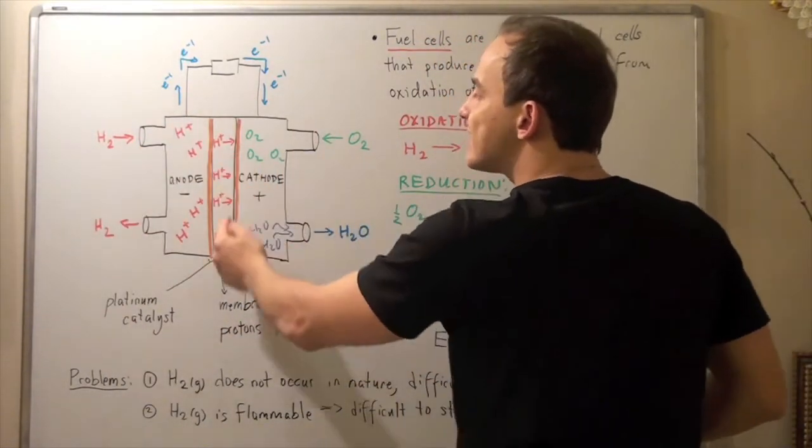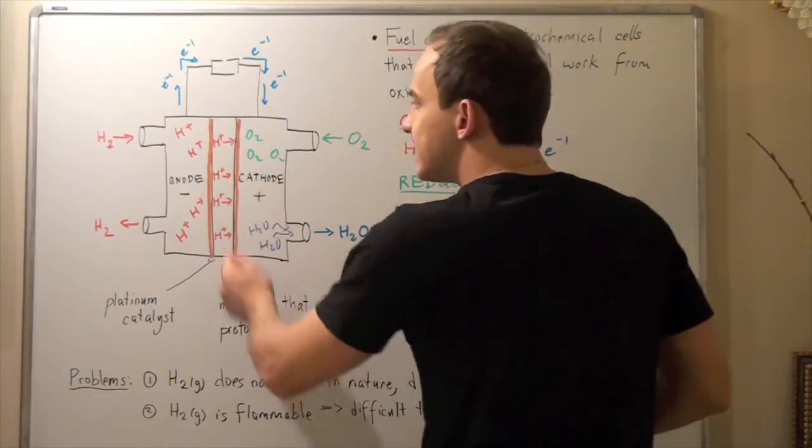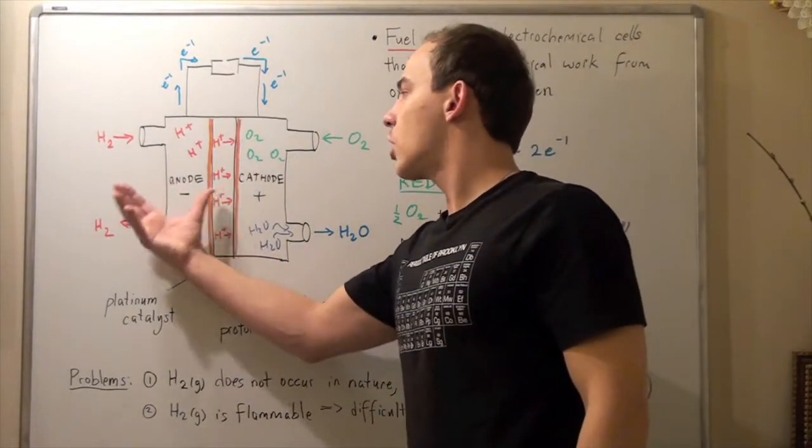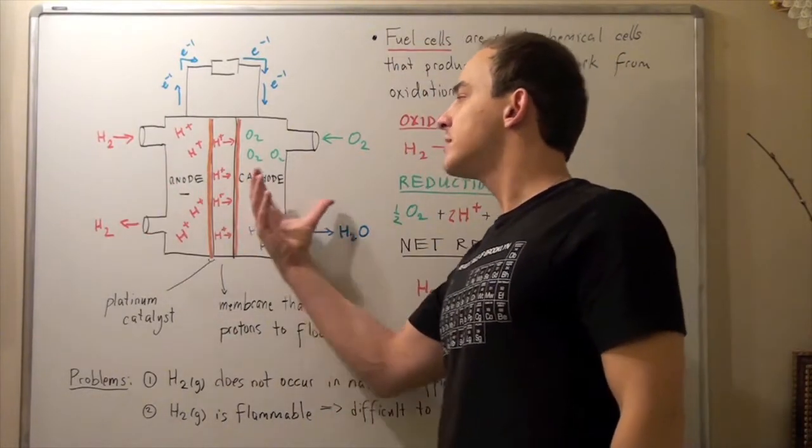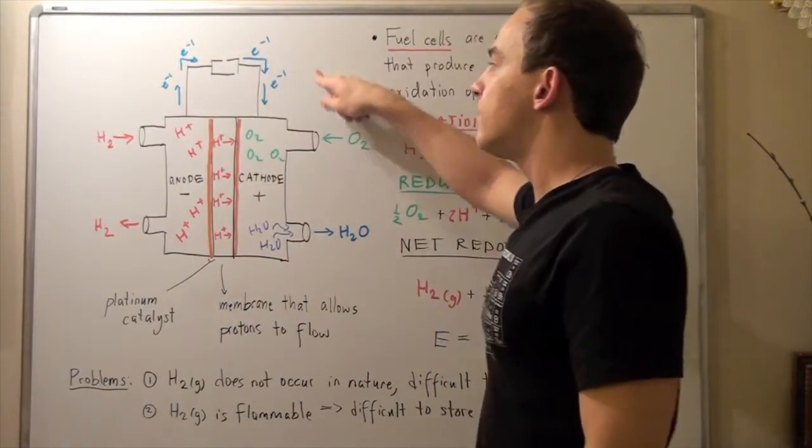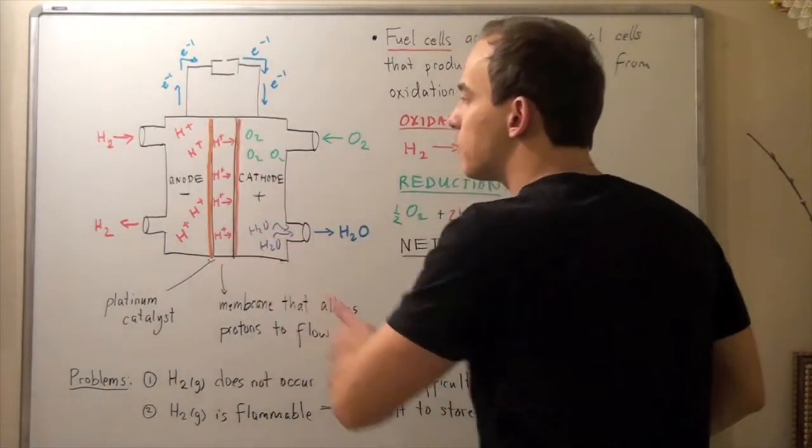So this, in a way, acts as a salt bridge because if this membrane wasn't here, we'd have a buildup of positive charge here and a lack of positive charge here. And then that means our electrons would stop flowing. So to close the circuit, we need this membrane.